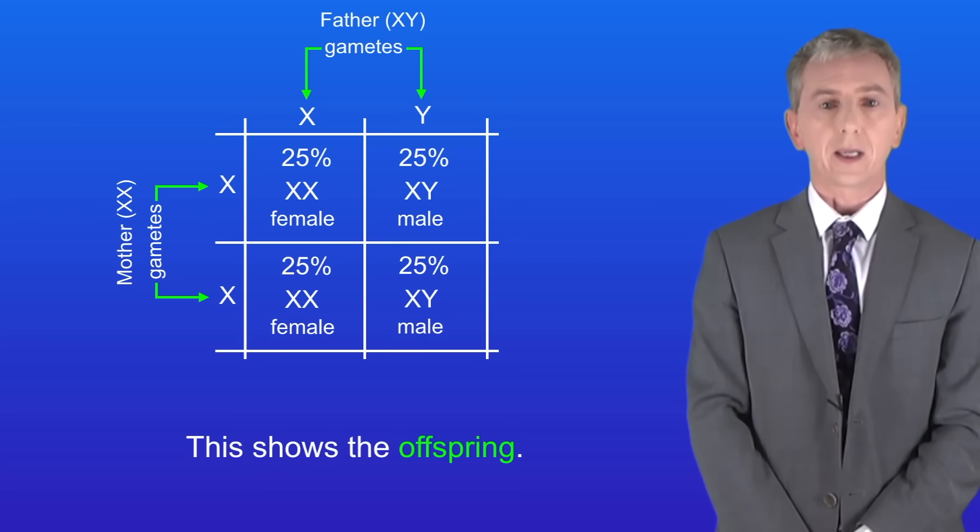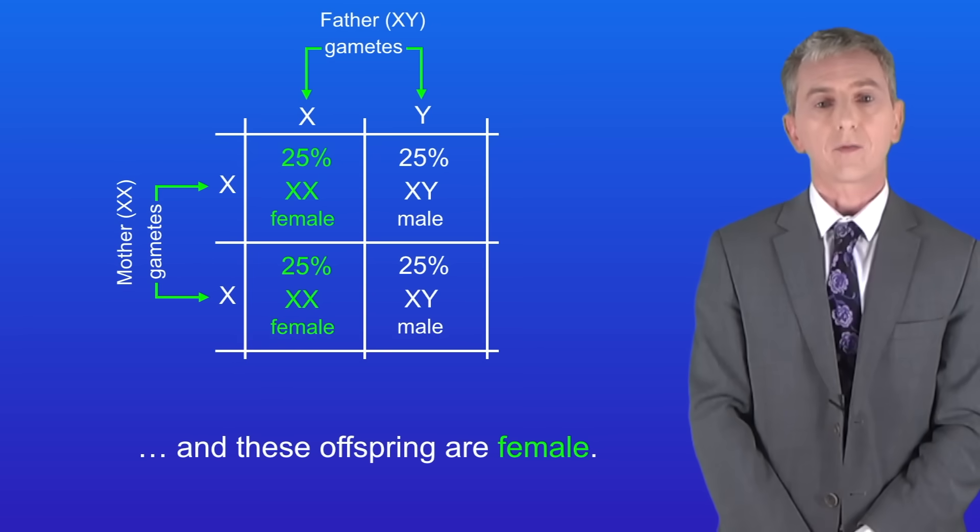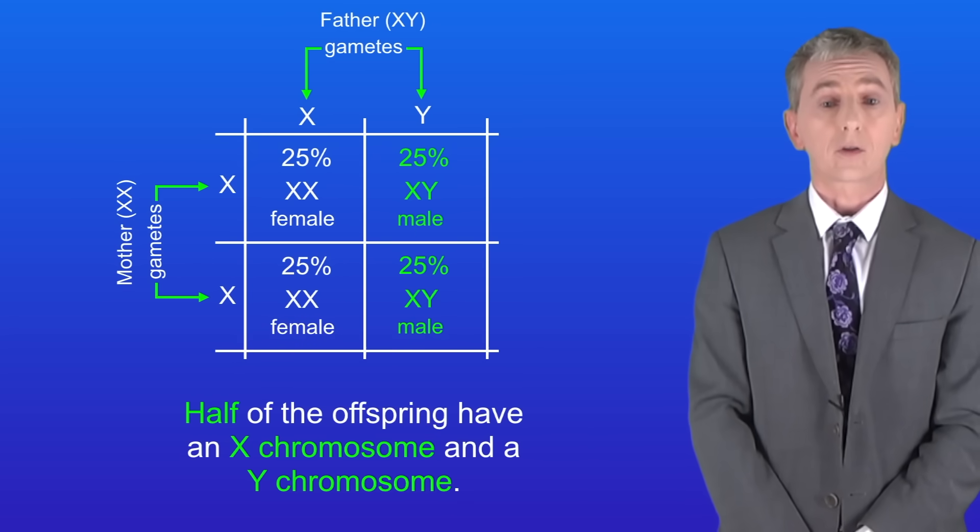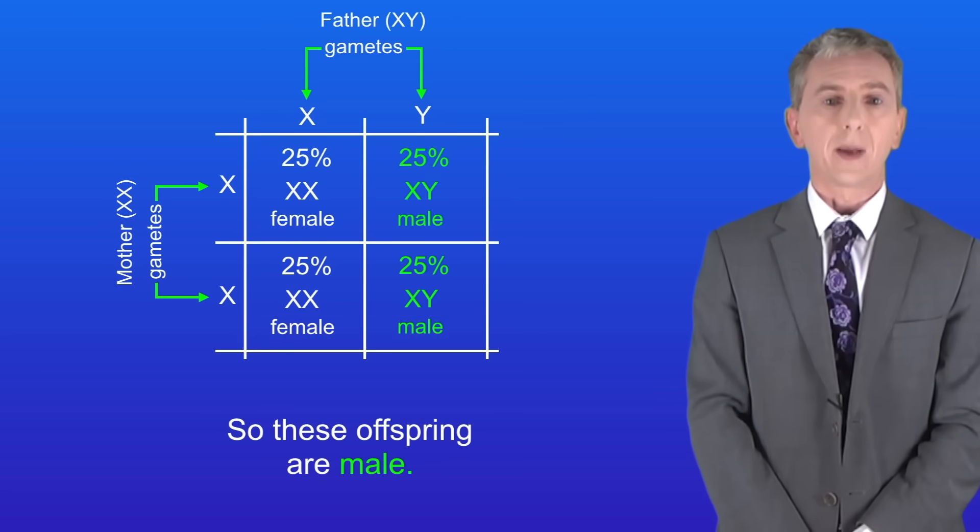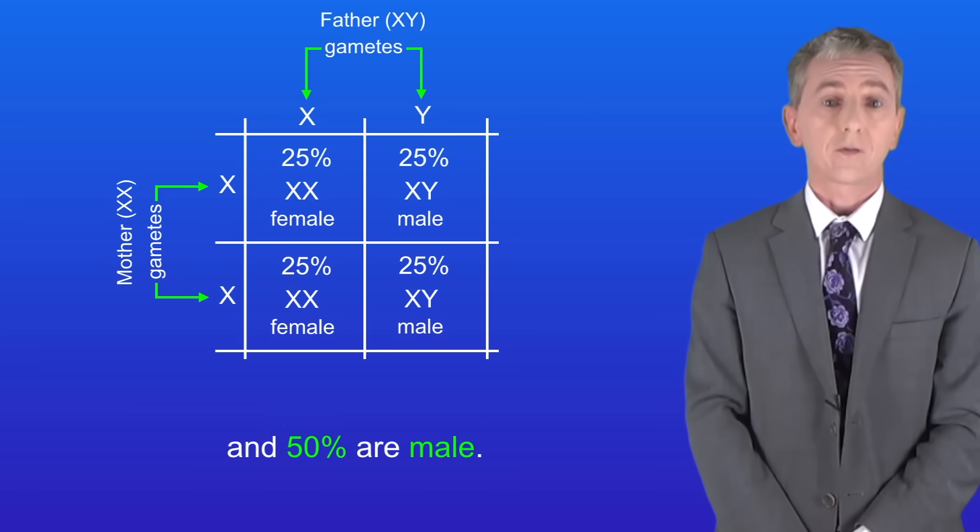Okay I'm showing you the offspring here. As you can see half of the offspring have two X chromosomes and these offspring are female. And half of the offspring have an X chromosome and a Y chromosome. So these offspring are male. So on average 50% of the offspring are female and 50% are male. In other words a ratio of one to one.